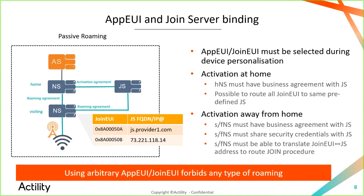Devices have been joining with arbitrary AppEUIs and you simply route to the home join server connected to your home network server, and it hasn't been a big problem. But now we are seeing many more networks starting to roam with each other. When activation away from home becomes really important, we encounter the following problem: the device is not provisioned on the visited network.